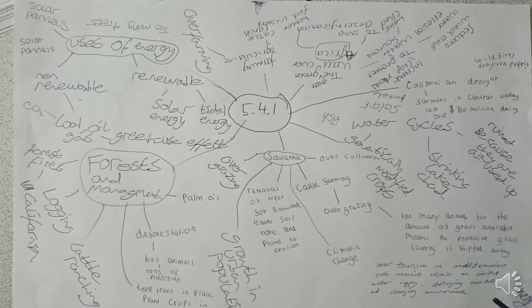5.4.1 looks at how people use ecosystems and environments for food, energy and water. Environments used for food include tropical rainforests — a good sustainable use is agroforestry, where you keep the trees but then graze animals and grow crops underneath. This is very, very sustainable and environmentally friendly.